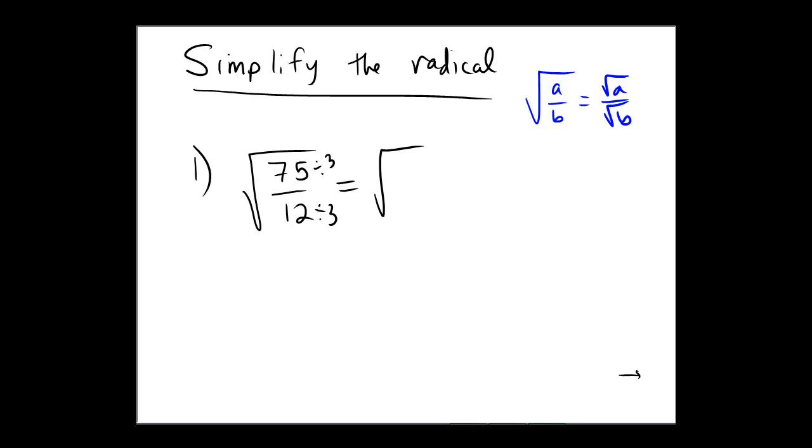So 75 divided by 3, that would be the number 25. And in the denominator, 12 divided by 3 of course is the number 4.